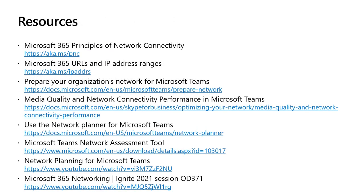To study for this section of the exam, several resources are on this page. Each of these links will take you to the appropriate areas. Again: principles of network connectivity, the URLs and IP address ranges — you don't need to memorize all of those, but be familiar with them, understand what they're about, and pay attention to the port ranges. Make sure you've read the TechNet or docs articles, and download and run the tools before you get into the exam so you're familiar with what's there. The last two links on this page are videos on YouTube that go a long way into explaining these concepts and reinforcing the learning. Go through those and you'll be in good shape for this exam.